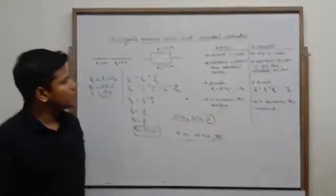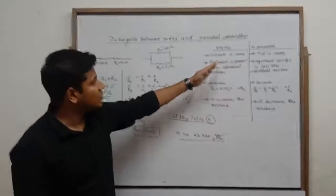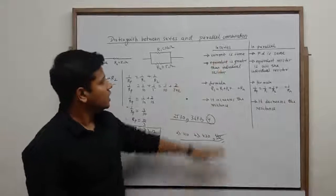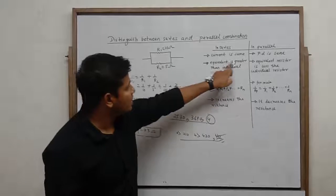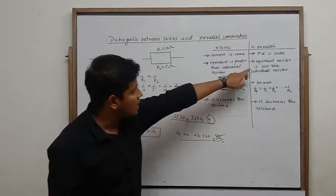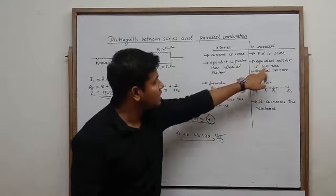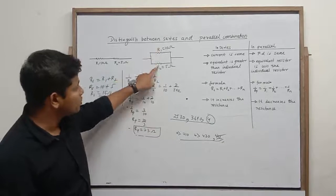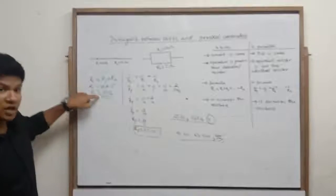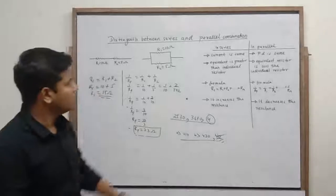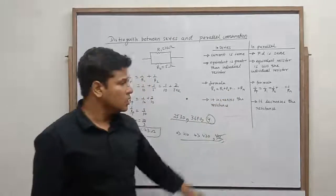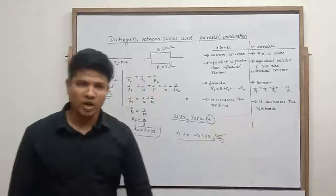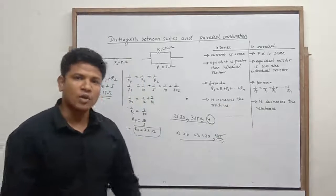Series में current same होता है, parallel में potential difference same होता है। Series में equivalent is greater than the individual resistor — circuit का resistance बढ़ा देता है। Parallel में equivalent is lesser than the individual resistor — circuit का resistance कम कर देता है। If you have solved the series-parallel, you can note this down.